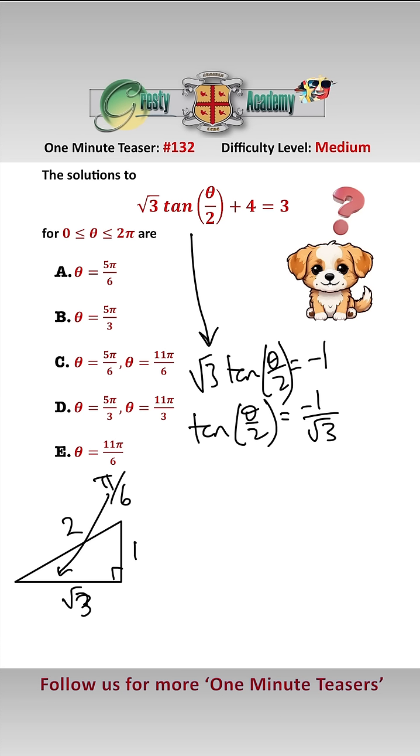But we're not looking for 1 over root 3, we're looking for a tangent of minus 1 over root 3. So therefore, we have to have a look at our quadrants here.